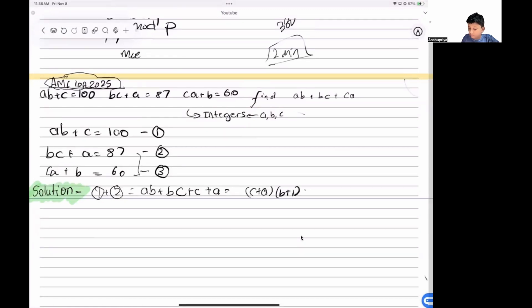This is equal to 187. Then we will do 2 plus 3. You will get similarly (a + b)(c + 1), which is equal to 147. And then we will do 3 plus 1, this equals (a + 1)(b + c), which is equal to 160.